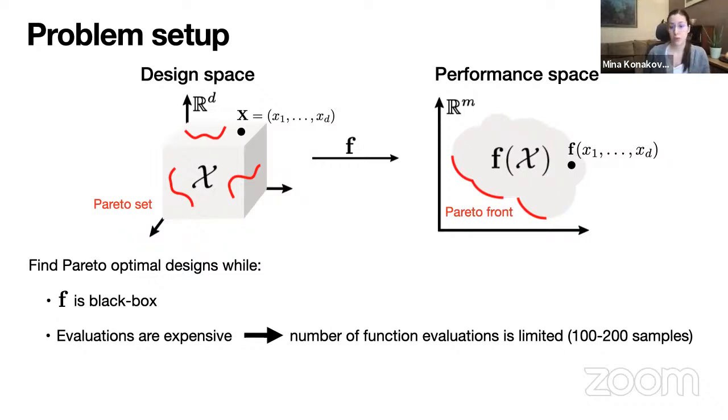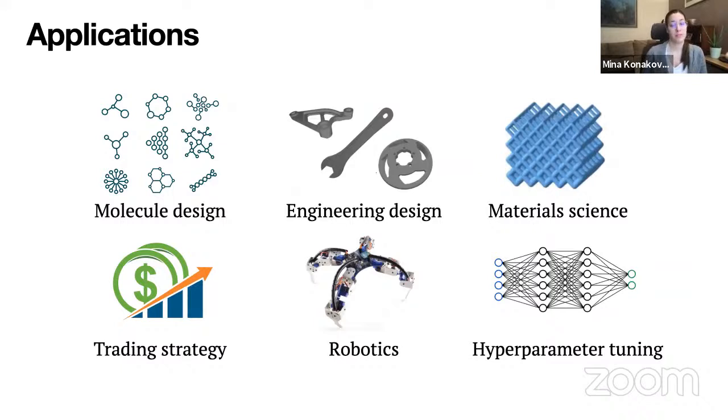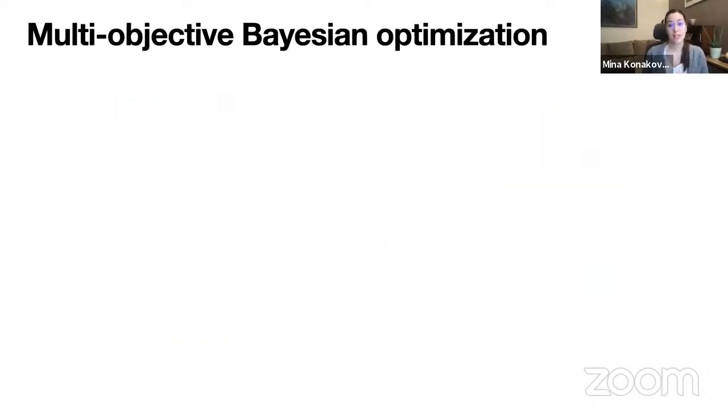You really have to be careful on which ones you choose. So this means that we have to choose wisely which samples to evaluate. And the problem setup like this can be found in many applications in molecule and drug design. Even in vaccine design that we are all very excited about nowadays. In engineering design, material science, developing trading strategies, optimizing robot controllers, tuning hyper parameters for neural networks, and so on. So how do we solve this problem?